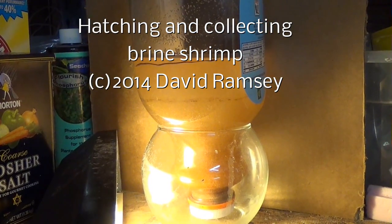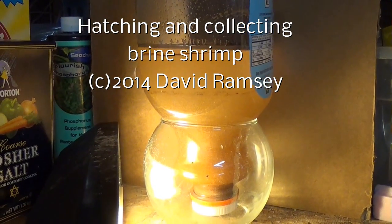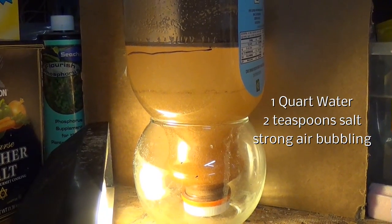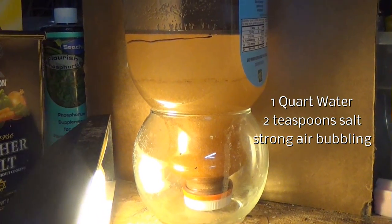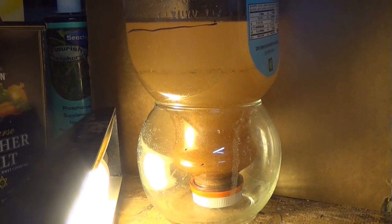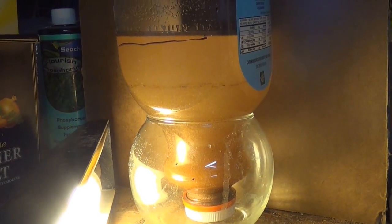Here's the brine shrimp bottle that we just made. I just showed you how to cut it out. I filled it up with a quarter water and two teaspoons of salt, and then I put a scoop and a half of brine shrimp eggs in yesterday morning.